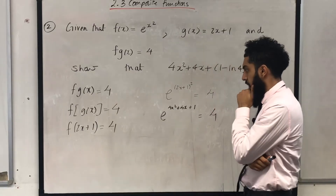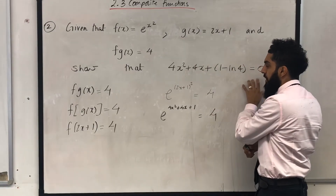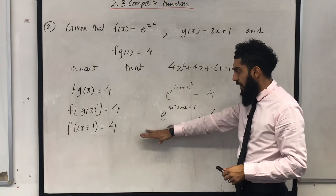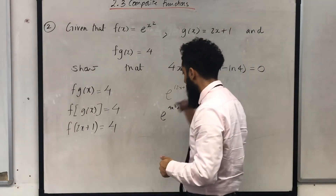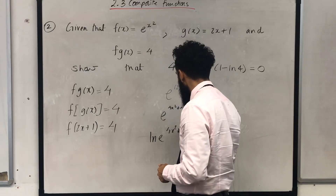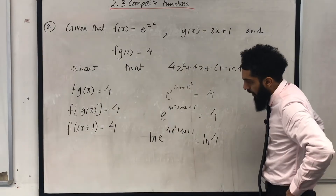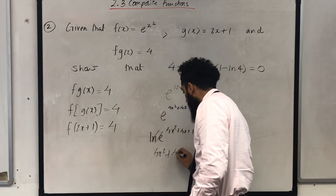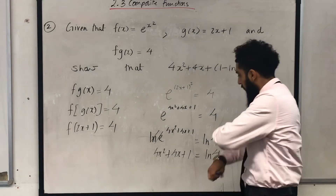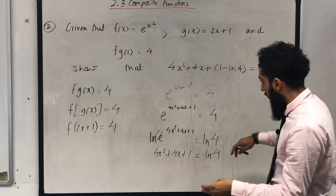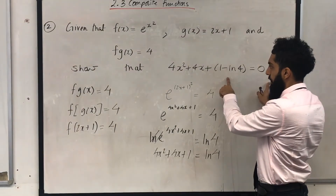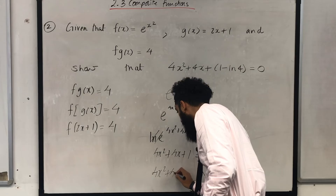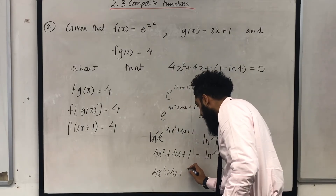We are now at this particular equation. I want to write this in the required form, so I need to get rid of the e. The inverse of e is the natural logarithm, so I can apply natural logarithms on both sides to cancel out the e. Cancelling the ln and the e brings down 4x² + 4x + 1, and this is equal to ln 4.